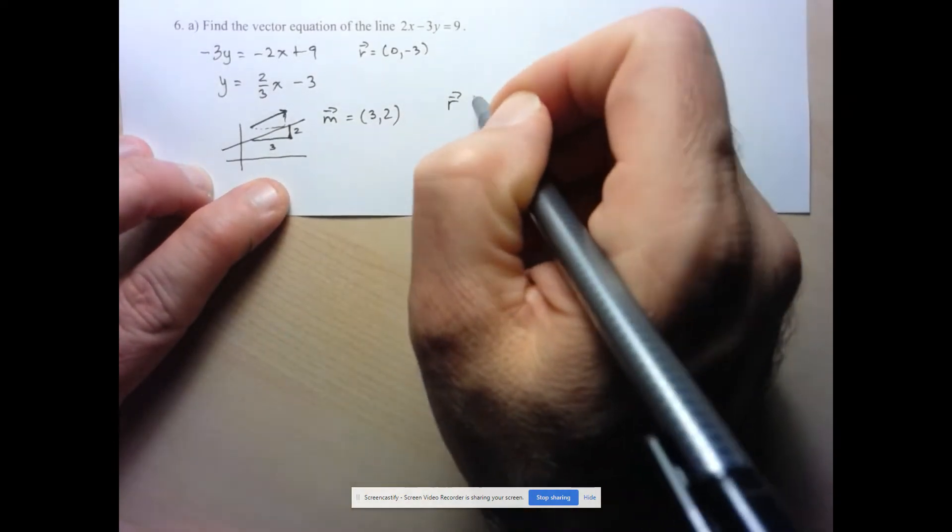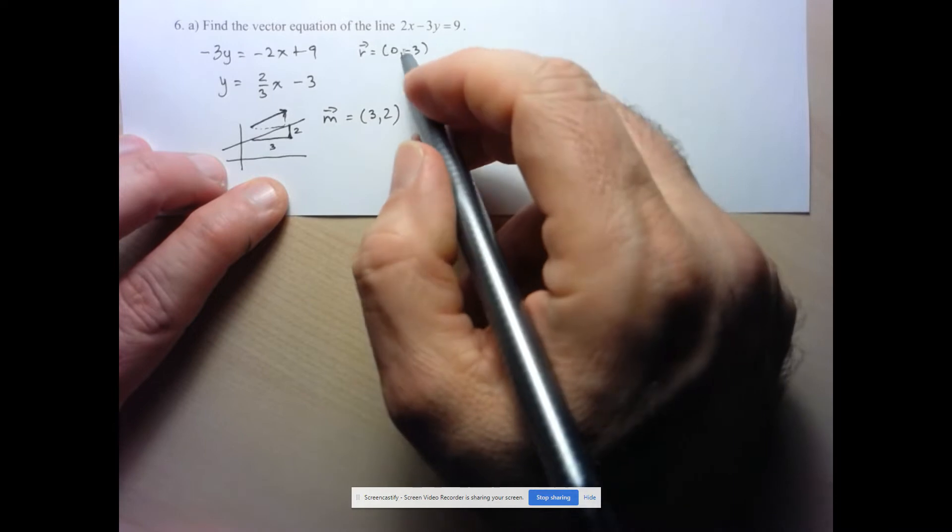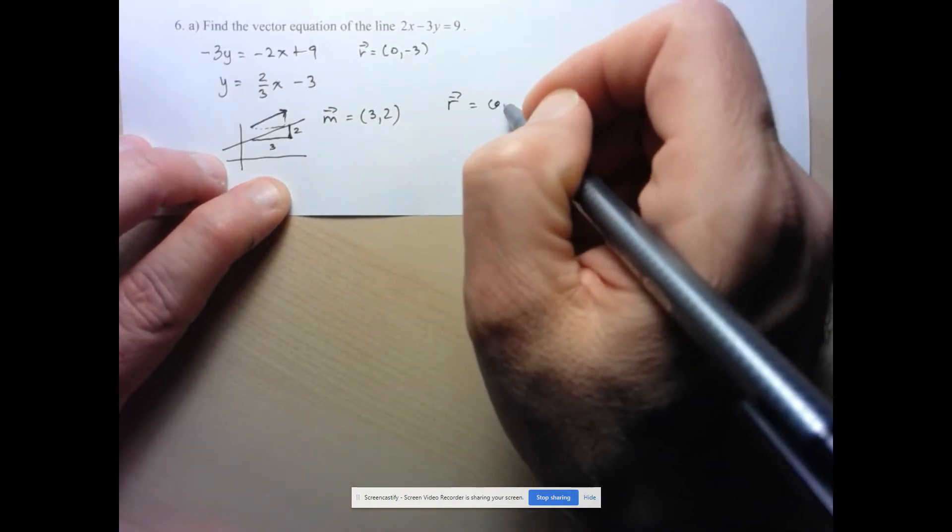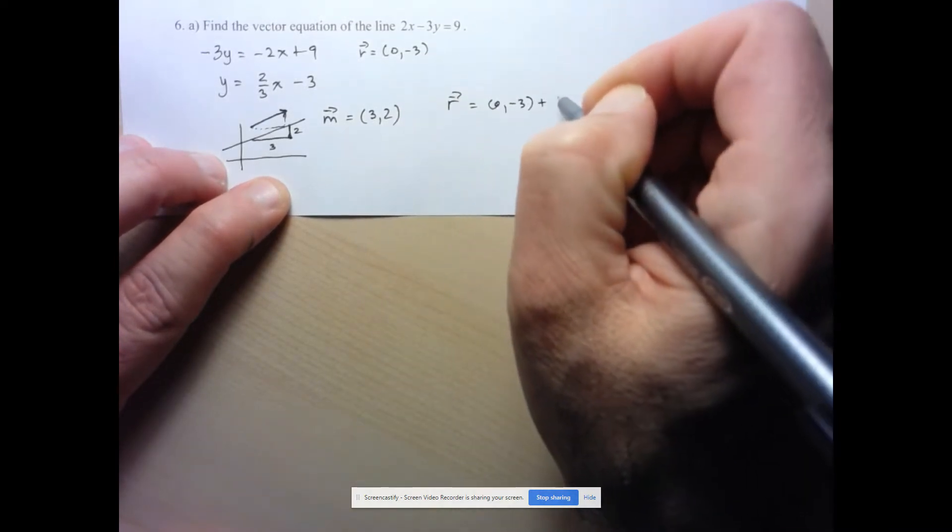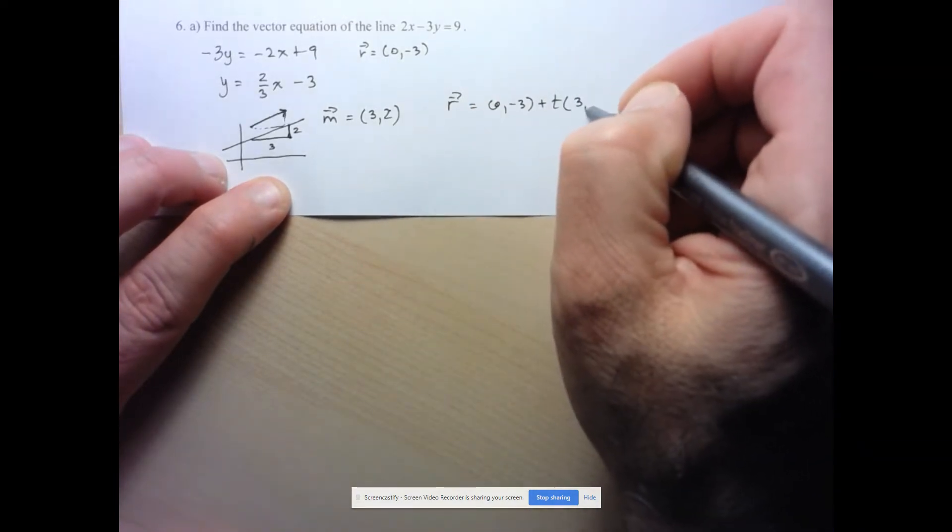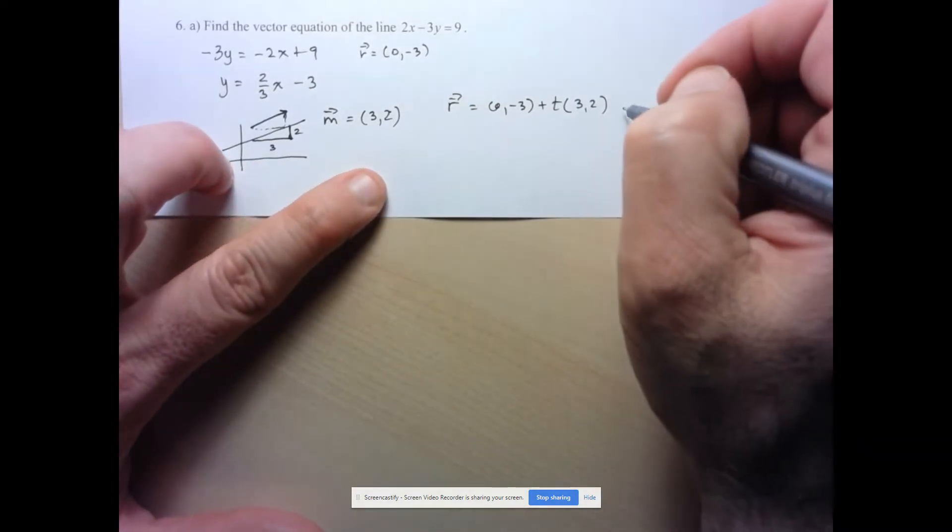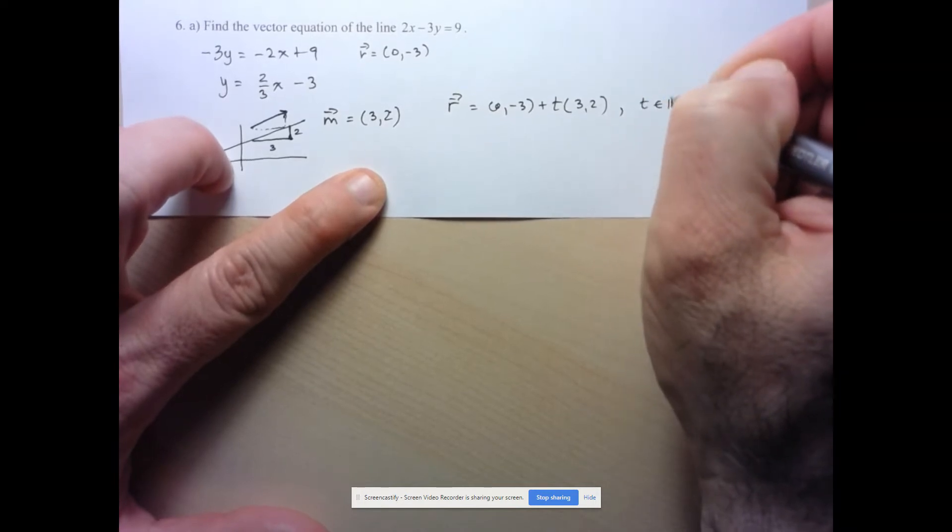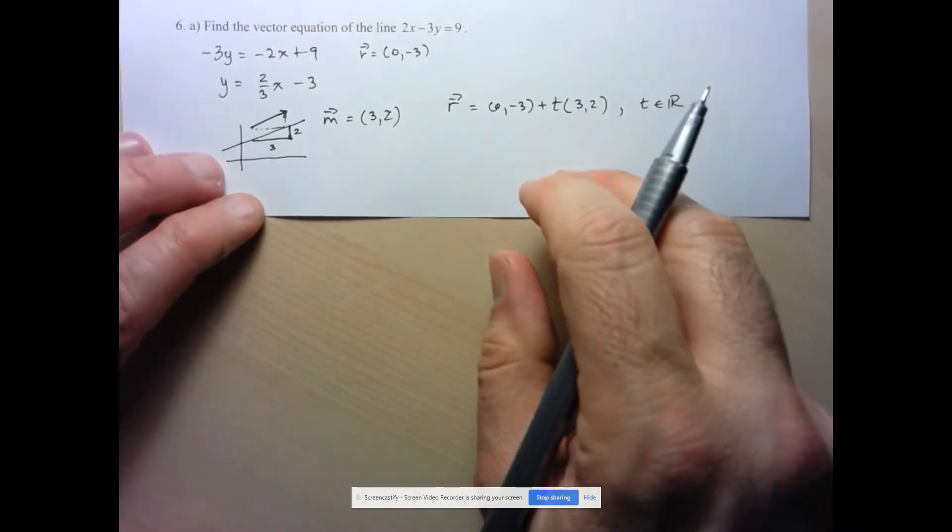So here I've got r is equal to my given point, which is 0, negative 3, plus some multiple of my direction vector, which we just found was 3, 2. And here we should specify that t can be any real number. So again, we use the fact that there's this connection between the slope, which gives us a sense of the direction of a line, and a vector, which indicates the exact direction of the line.